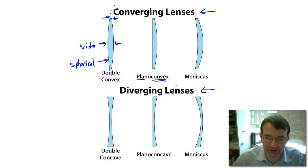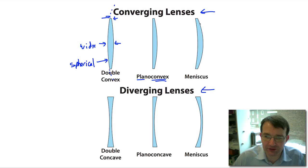Then we have the meniscus lens, where we have curvature on both sides curving the same way, but one has a smaller radius of curvature than the other. If you're far-sighted, this is probably what the lens in your glasses looks like.